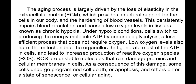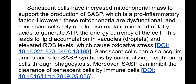Stiffening of blood vessels persistently impairs blood circulation and causes low oxygen levels in tissues, known as chronic hypoxia. Under hypoxic conditions, cells switch to producing energy molecules (ATP) via anaerobic glycolysis, a less efficient process that does not require oxygen. Low oxygen levels also harm the mitochondria and lead to increased production of reactive oxygen species — unstable molecules that can damage proteins and cellular membranes. As a consequence, some cells undergo programmed cell death (apoptosis) and others enter a state of senescence, or cellular aging.